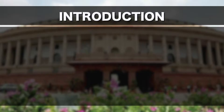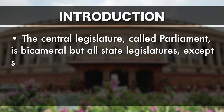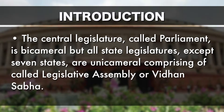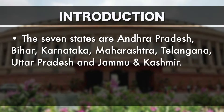As all of you know, the Constitution provides for a parliamentary type of government for both Central and State Government levels. The Central Legislature is composed of two houses, that is Lok Sabha and the Rajya Sabha. But in case of the State Legislature, except in seven states, all states have a unicameral legislative assembly, or we can say Vidhan Sabha.